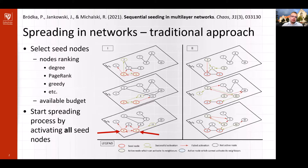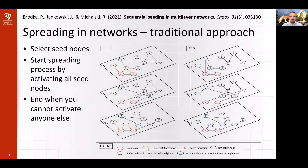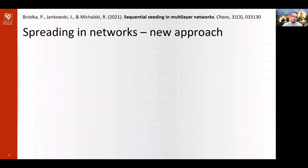Just a quick reminder: in the independent cascade model, each newly activated node has one and only one chance to activate each neighbor, depending on its activation probability. So after just three steps, the process ends, since we do not have any node which can activate its neighbor, and finally we end up with seven active nodes in our small network. This is the traditional approach that we have known and used for years.